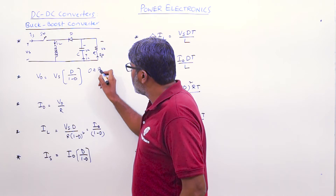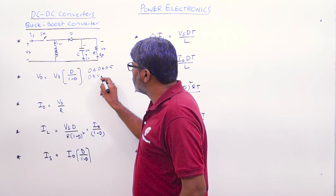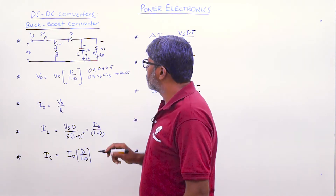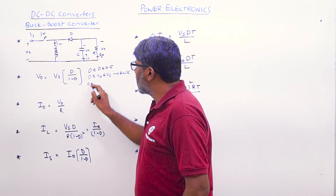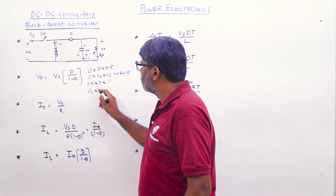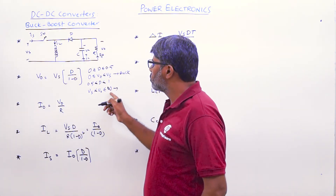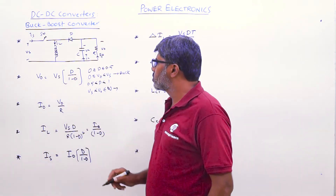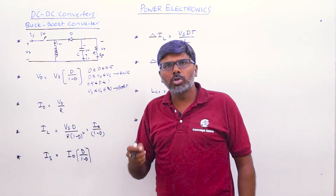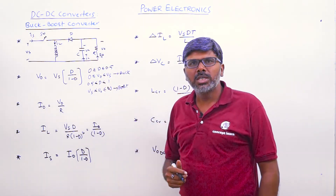When duty cycle is between 0 and 0.5, V0 varies between 0 and Vs — this is the buck operation. When duty cycle varies between 0.5 and 1, V0 varies between Vs and infinity — this is boost converter operation. So the buck-boost converter gives both operations by varying the duty cycle control parameter.